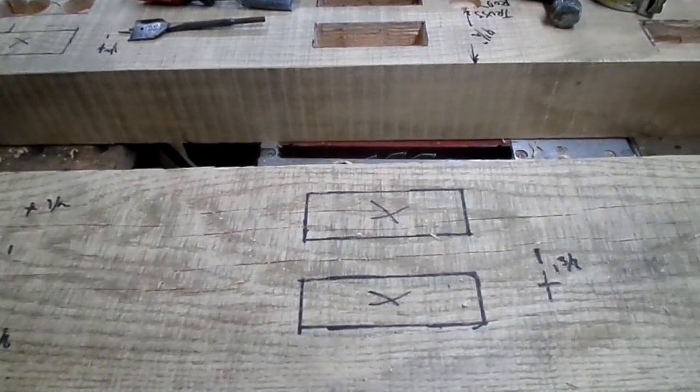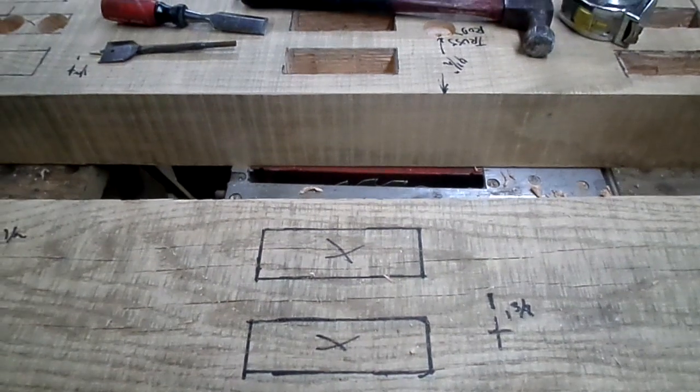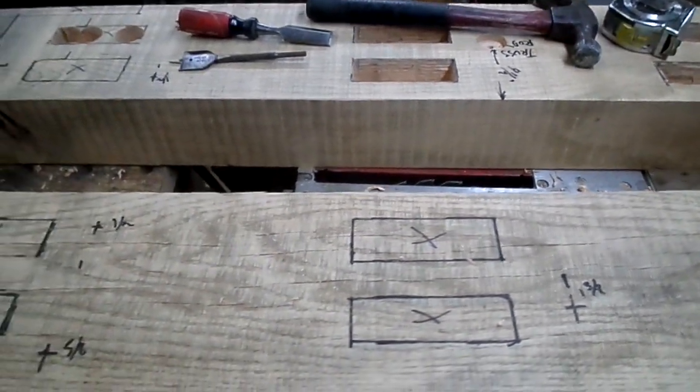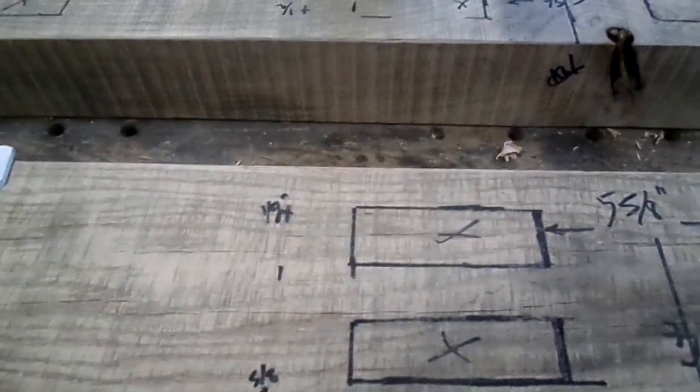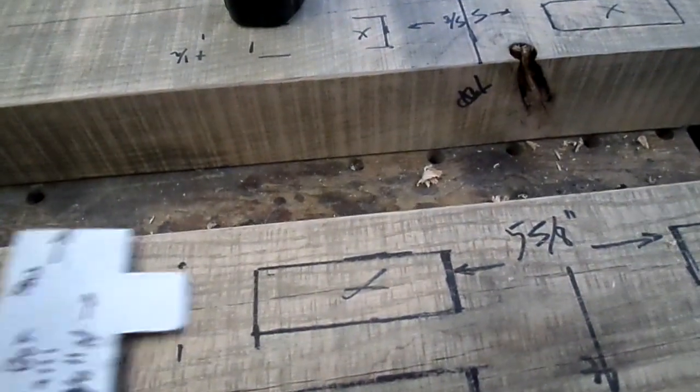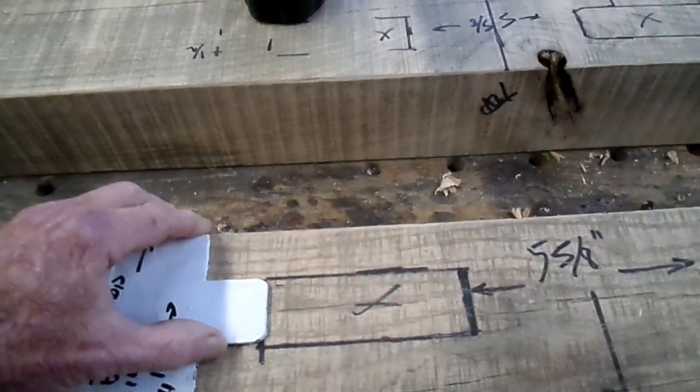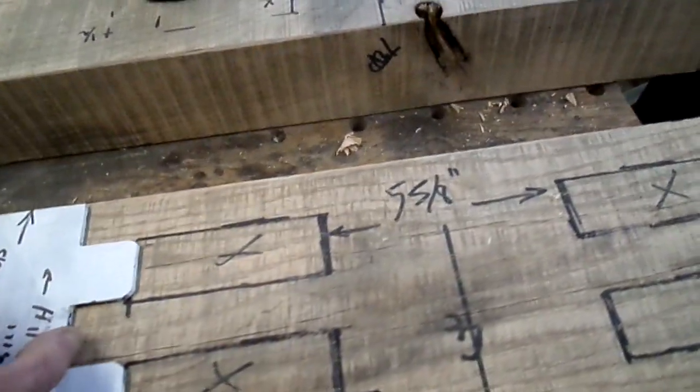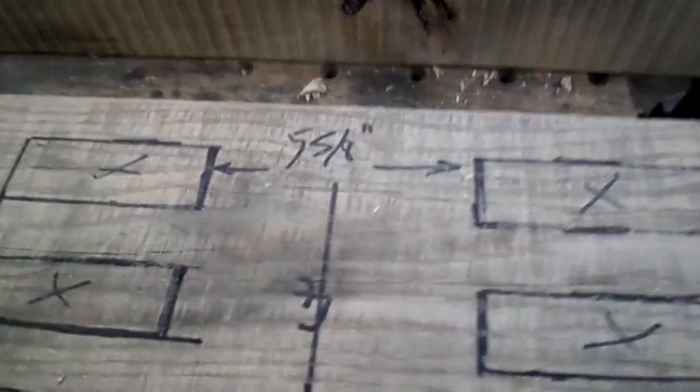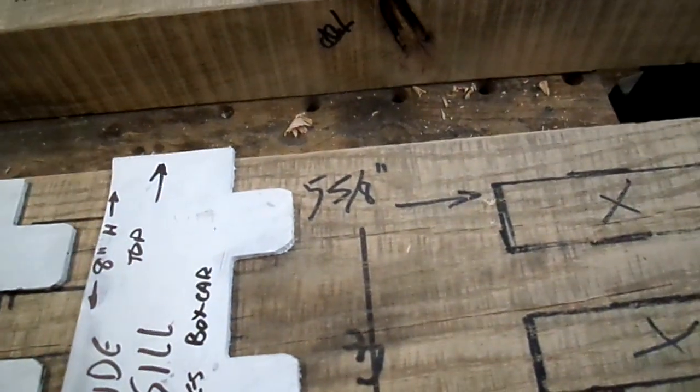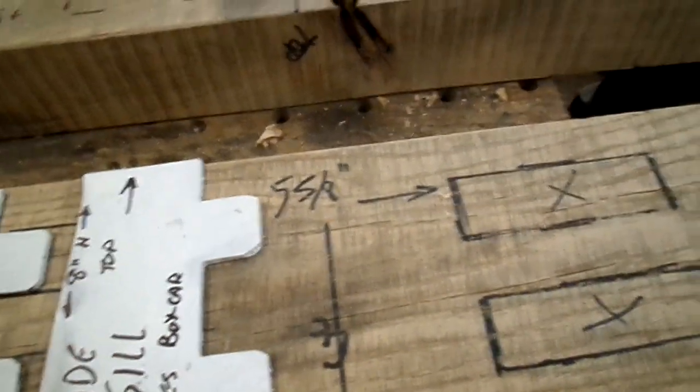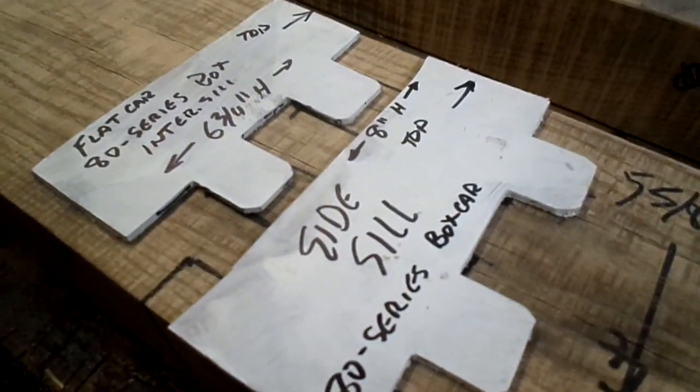In cutting mortises for the end beams and side sills, everything was laid out ahead of time. Templates for the various sills were used to mark all of the spaces so that everything is the same. The center sills are one inch less in height than the side sills, so two templates were used, one for each.